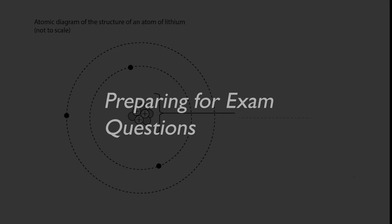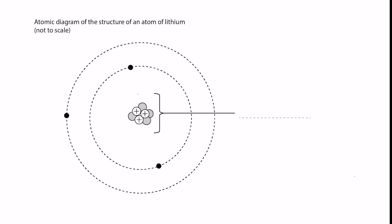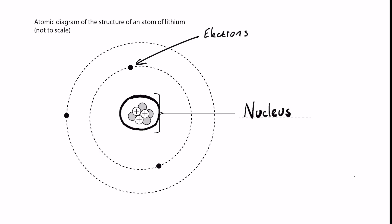A diagram such as this is pretty common. You will need to be able to identify the nucleus — that's the group of little spheres in the middle — and the electrons in their orbits around the outside. You will also have to distinguish between the two different types of subatomic particle in the nucleus: the protons and the neutrons. At this point, we're also going to need to talk about the properties of those three types of particle.